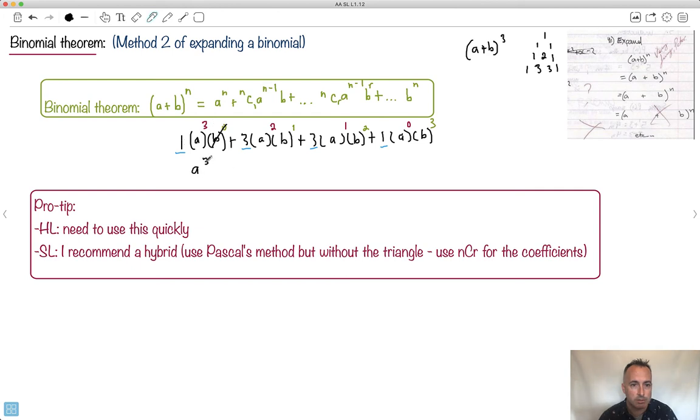So do you notice that it's just 1 times a cubed. See, it's just a cubed. Let's see this next one. What is this? This is 3a squared times b. The next one then is, do you see it's 3 and it's ab squared. The next one is, well, this one right here cancels out, and I just get b cubed. I just want to show you if I actually fully expanded it, this is what I would get.